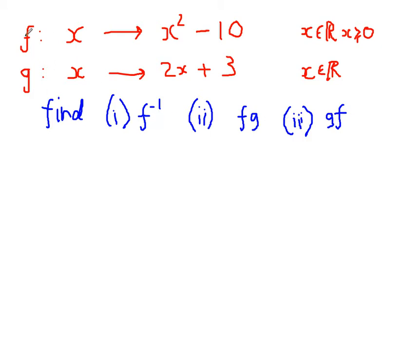Now, I've defined two functions here. f takes x and maps it onto x squared minus 10. It accepts any real number as an input, provided it's greater than or equal to 0, so provided it's not negative. And g takes x and maps it onto 2x add 3, and you can put any number you like into that function.